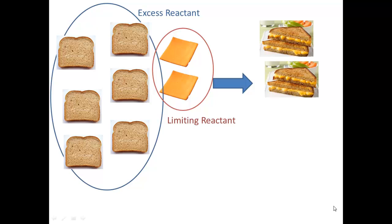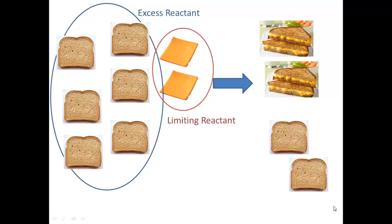We are going to be asking more questions, such as how much of our excess reactant would be left over. In this problem, we would have two pieces of bread left over. Our other question would ask how much of our limiting reactant, the cheese, would we need to add to what's left of our excess reactant in order to use it up. We have two pieces of bread left over, so we would just need to add one more piece of cheese to use up those two pieces of bread.